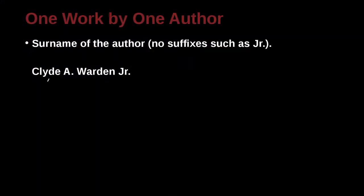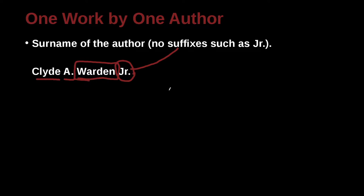The family name is the name we're going to cite. The other names are the given name — the first name — and then the middle name. Then there is a suffix, which comes afterwards. This suffix is not a title like doctor, professor, lawyer, or MD. No, this is part of the actual person's name.